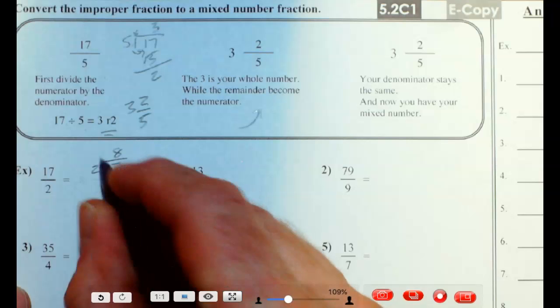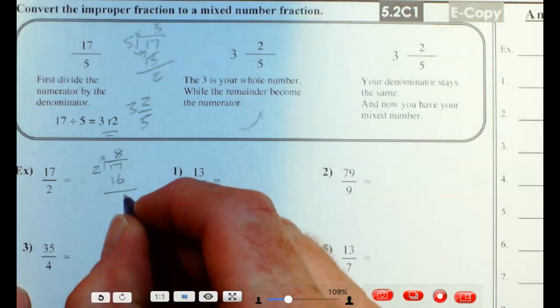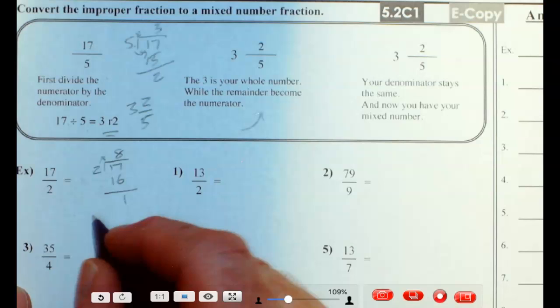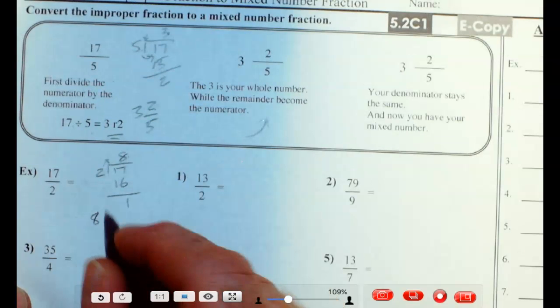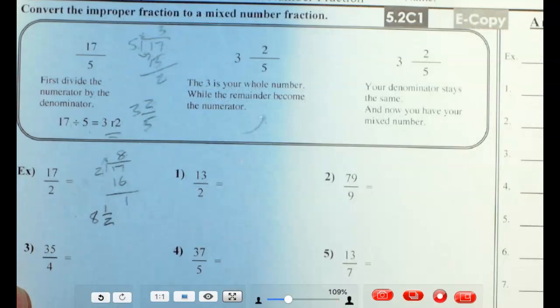That's 2 times 8 is 16. You've got 1 left over. So here's your answer. It's 8 wholes and 1 part out of 2, or 8 and 1 half.